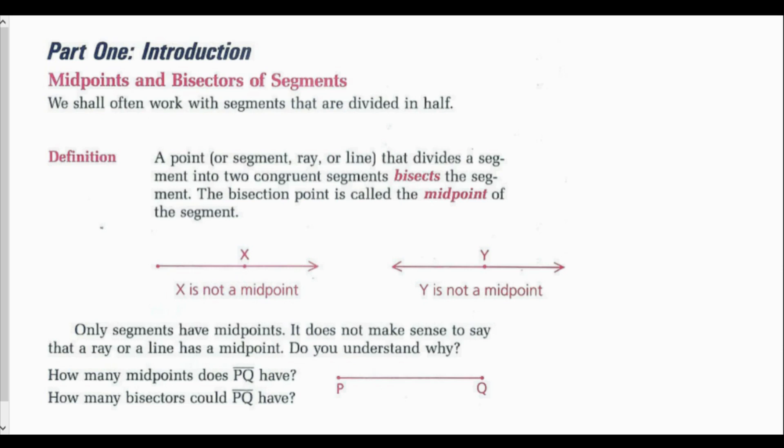It will also be helpful for proofs if you create each definition into a conditional statement. Remember, a conditional statement is an if-then statement. So for our definition of bisect, a conditional statement would be: if a point divides a segment into two congruent segments, then it bisects the segment. A conditional statement for midpoint could be: if a point is a midpoint, then it splits the segment into two congruent segments. Only segments have midpoints.